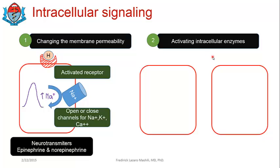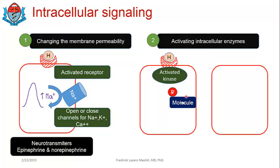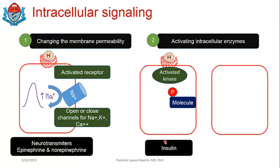The second mechanism of action is through activating intracellular enzymes, which can be divided into two parts. First, a hormone-receptor complex activates a receptor, and this activated receptor becomes an activated kinase — a kinase is an enzyme that phosphorylates. Once you have an activated kinase, it will phosphorylate a molecule; when a molecule is phosphorylated it is either activated or deactivated, eventually bringing about a cellular or biological response.